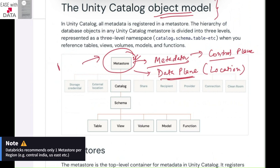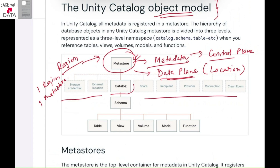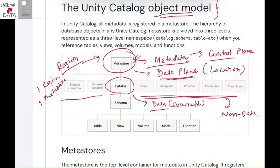It is very important to know that for a single region, it is always advised to have only a single metastore — one region should have one metastore. Below metastore, the most important is the catalog. Catalog is the data securable object, and the rest are non-data securable objects. It means catalog deals directly with your data, while the others are there to support your data.